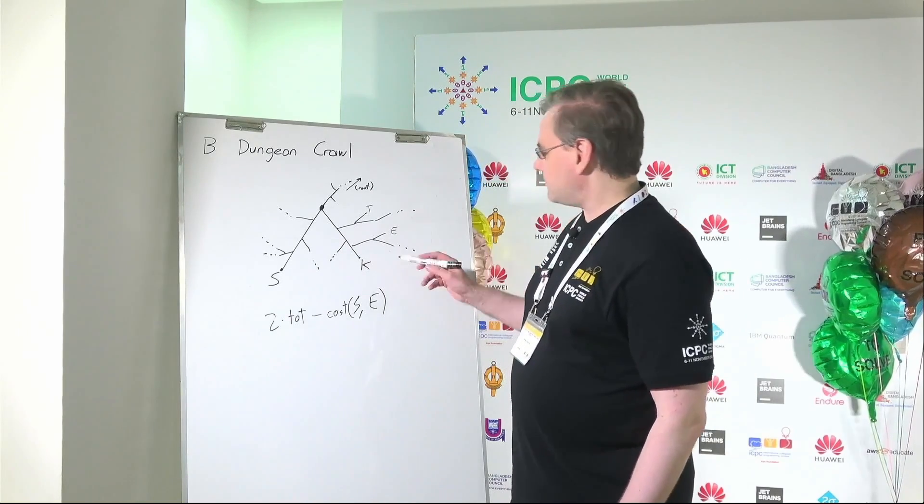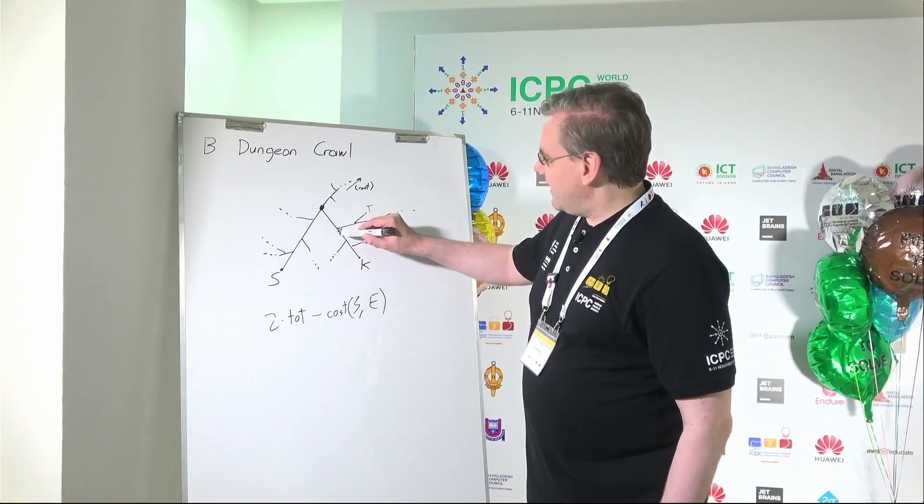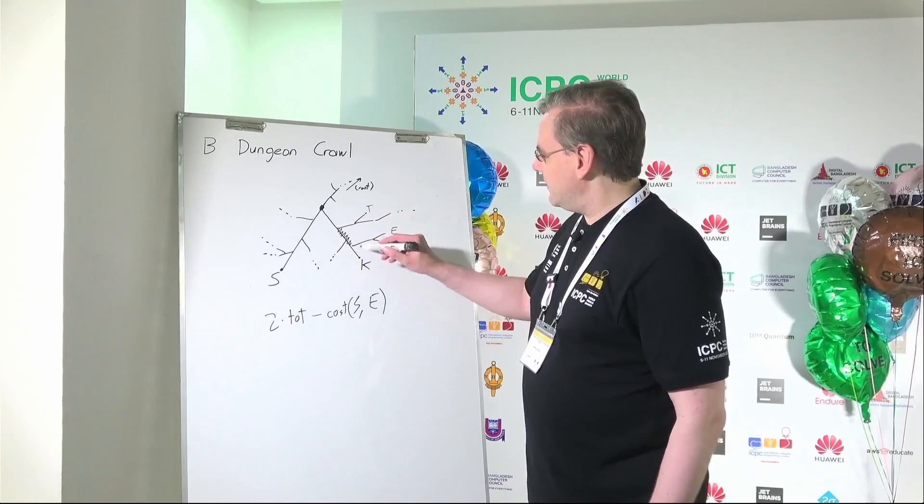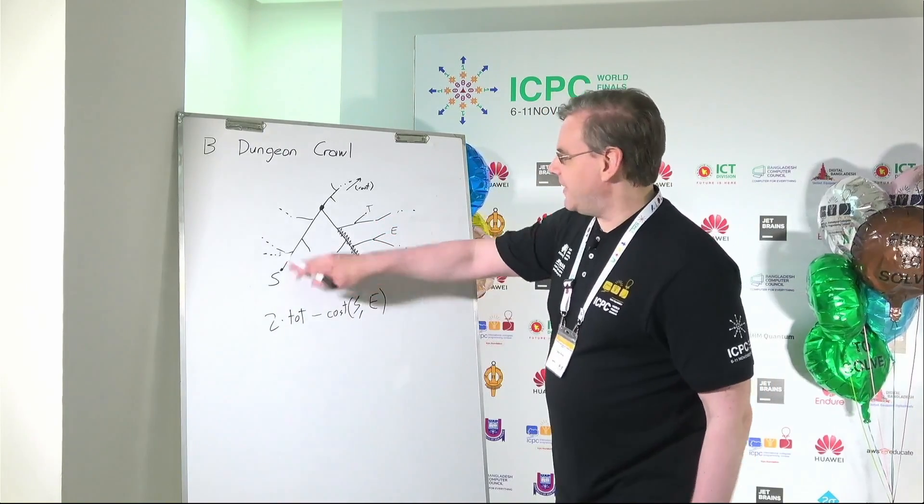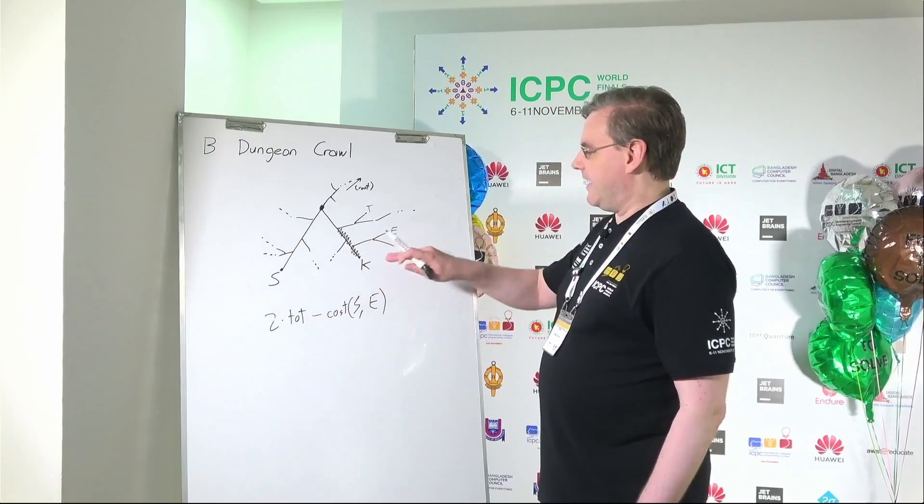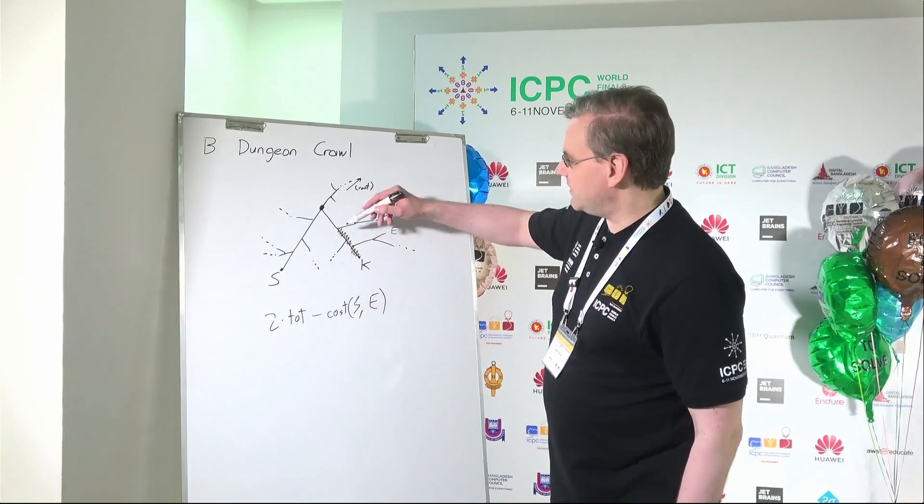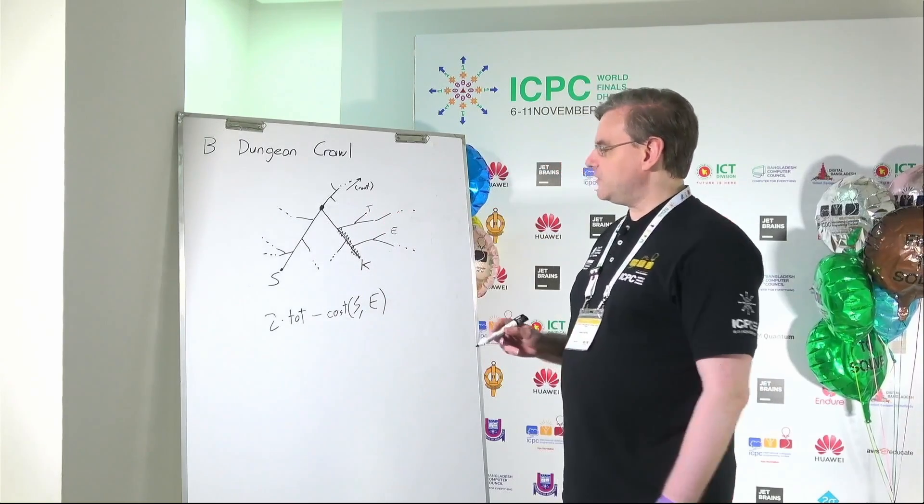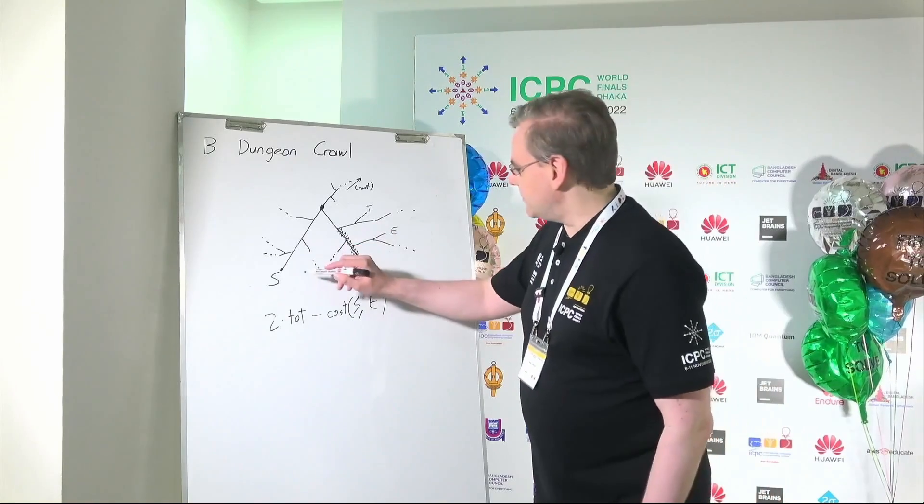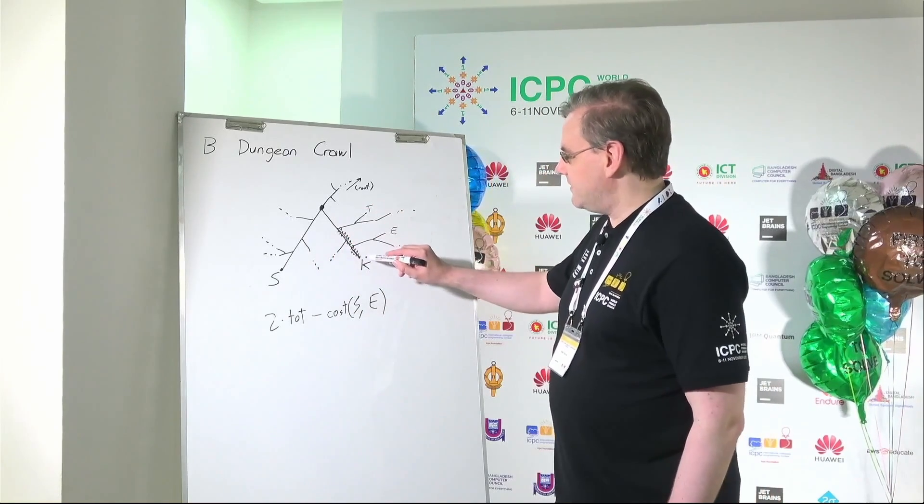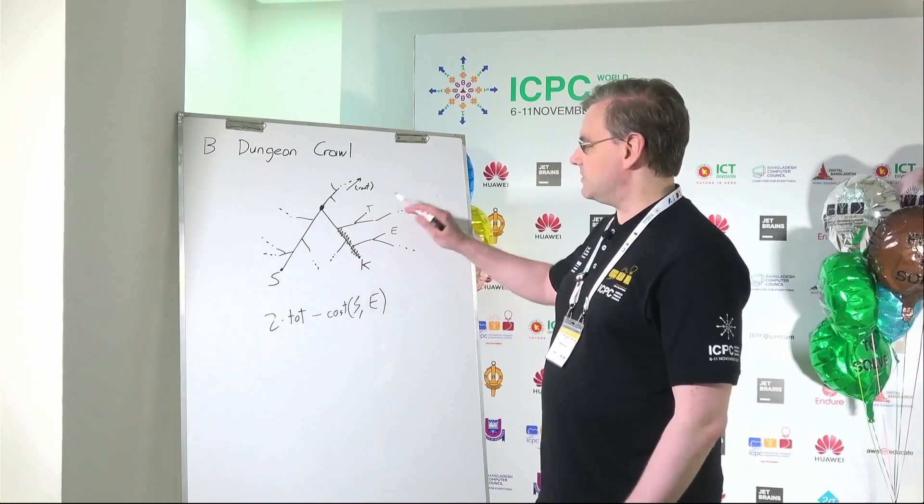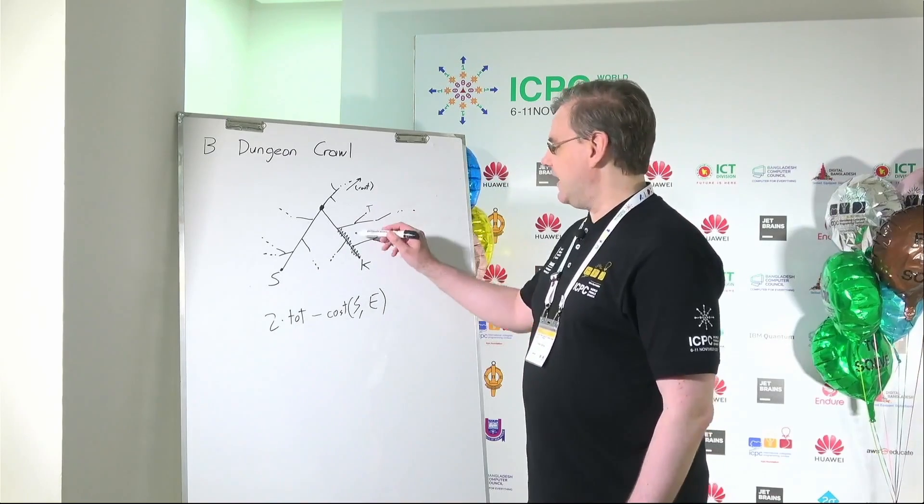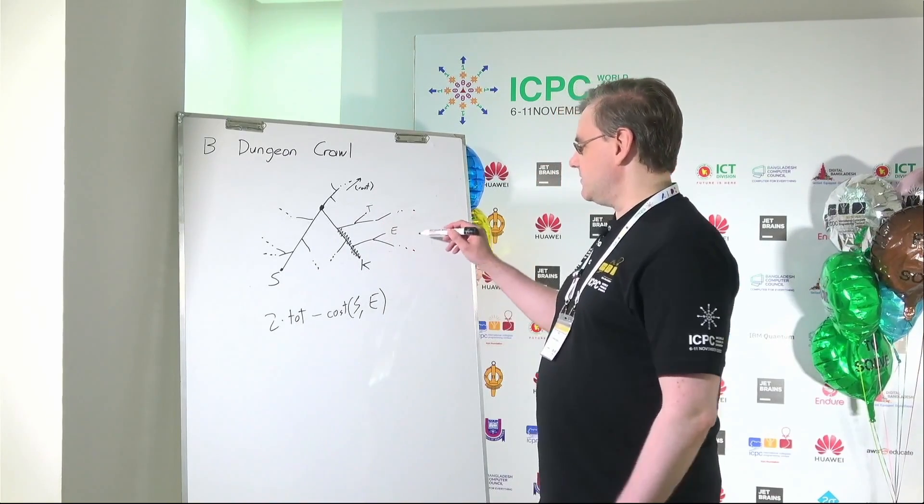So in fact, if you look at all of the edges that are between, that are both on the path from S to K and on the path from K to T, if you look at these edges, these edges you will end up having to traverse three times. You will have to go from S to K and then you'll have to go back to handle the trap subtree. And then you'll have to come back to E.